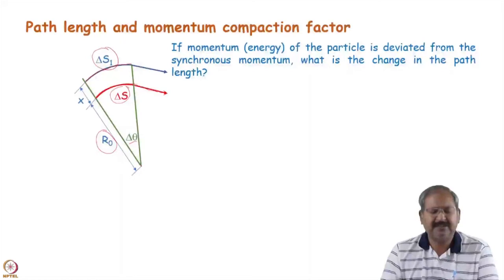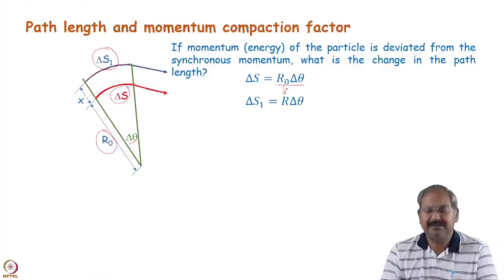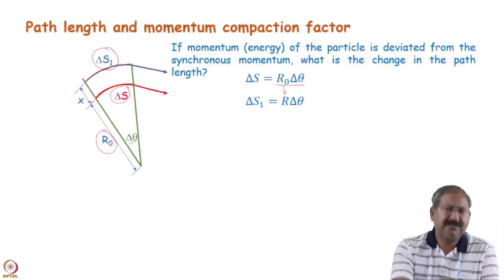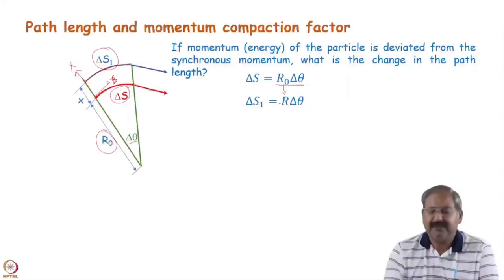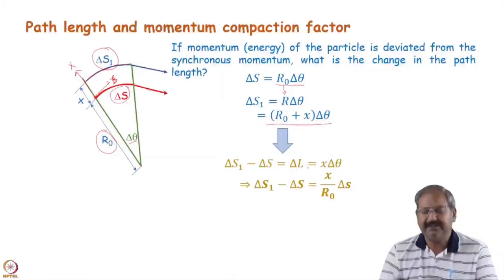We will see how delta s_1 compares to delta s. We can write delta s = r_0 * delta_theta and similarly delta s_1 = r * delta_theta. Instead of r_0 it will have some r because momentum has been changed. In the transverse coordinate system, the origin is at the synchronous particle position; s (or z) is the longitudinal coordinate and x is the transverse one. So r = x + r_0, giving delta s_1 − delta s = x * delta_theta.